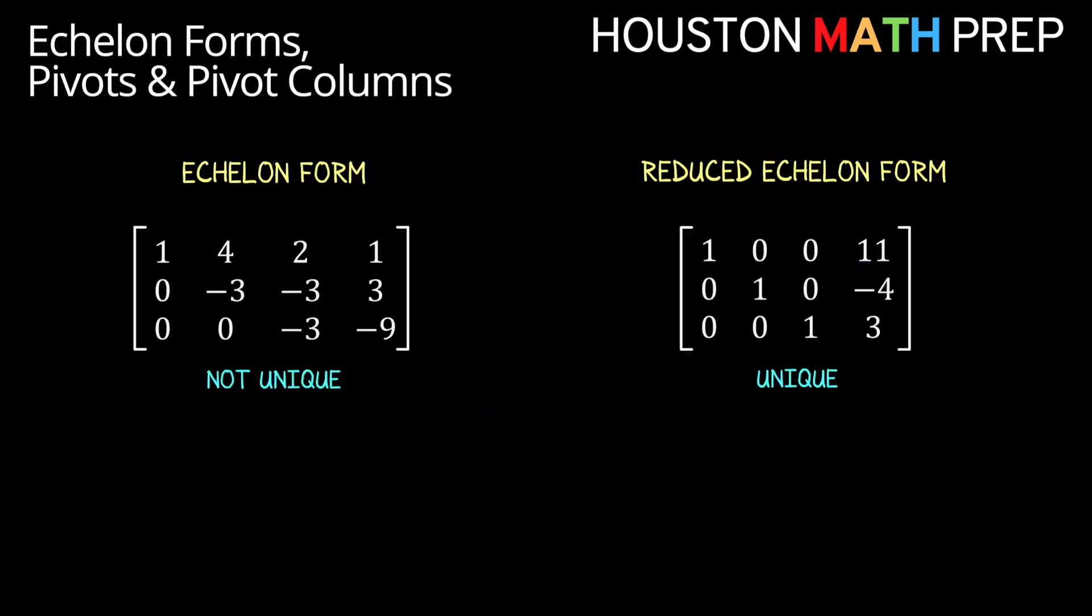One final difference we'll mention about these forms in this video is that the reduced echelon form of a matrix is unique, but just the plain echelon form of a matrix is not unique. So if you and I both have the same system in its reduced echelon form written down on separate pieces of paper, then we know we're both working off of the exact same matrix. But if we both only have our same system in echelon form, we might be working off of different things on our piece of paper. We'll give you an example here.